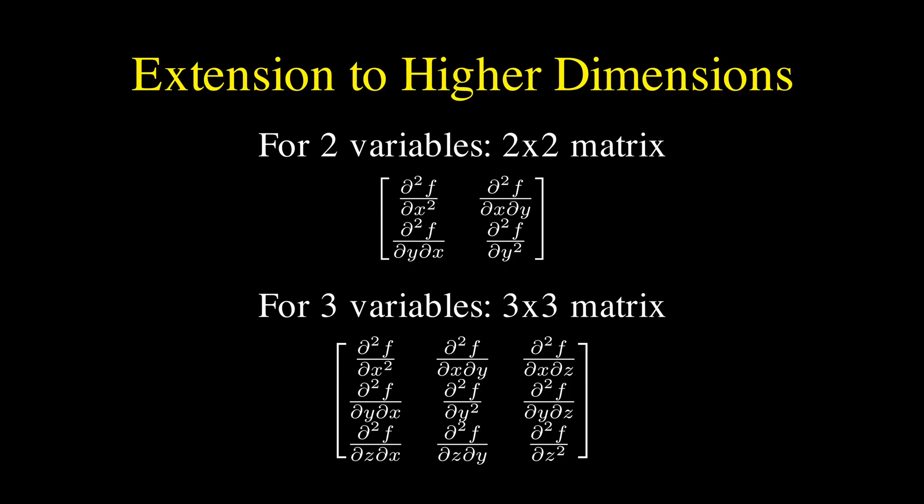And if it was a 4 variable function, you'd get a 4x4 matrix, or a 100 variable function would give you a 100x100 matrix, which sounds enormous, but it's a very organized way to store all that information.